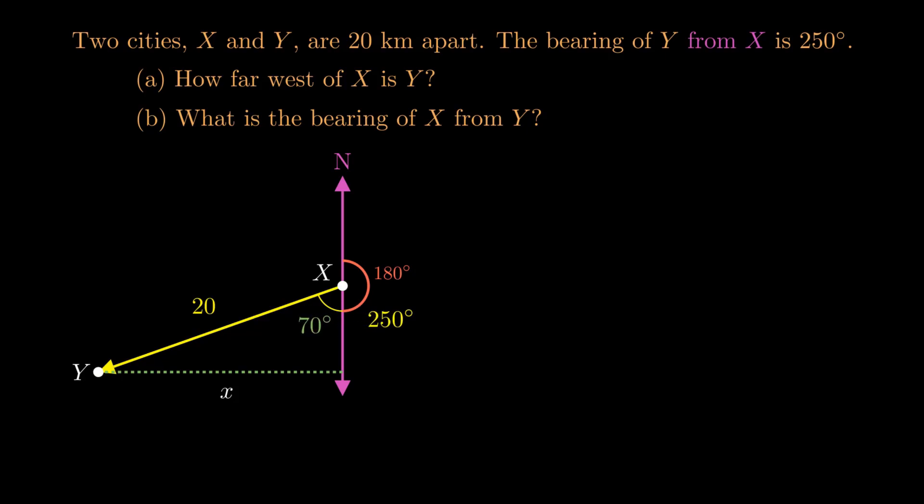So now we've got an angle inside our right-angled triangle, we can bring out our trig tools. 20 is our hypotenuse, and x is opposite the 70 degrees, so we'll use sine. It eats the 70 degree angle and gives us opposite over hypotenuse, so x over 20.